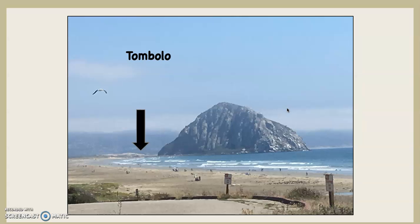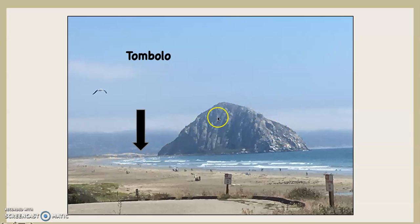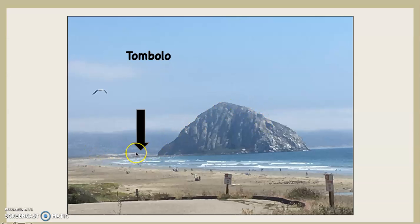That black arrow is pointing at a tombolo. The tombolo is the beach that's connecting this sea stack — Moro Rock right there — to the shoreline. Otherwise, this would be an exclusive island out here. But this beach stretches out and connects Moro Rock, which is a sea stack, to the shoreline. The beach is the tombolo.